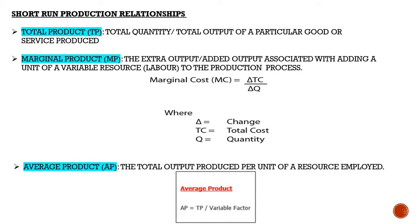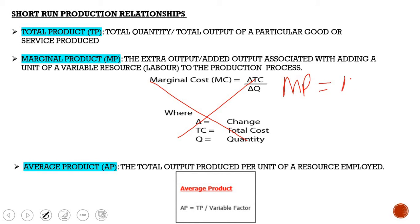Looking at short run production relationships: total product is the total quantity or total output of a particular good or service being produced. Marginal product is the extra output associated with adding a unit of a variable resource — it equals the change in total product over the change in quantity. Average product is total output produced per unit of resource employed, equal to total product divided by the variable factor, such as units of labor.